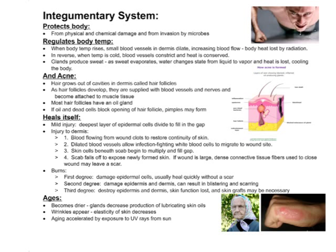The integumentary system also heals itself. For a mild injury, the deepest layer of epidermal cells divides to fill in the gap. For injury deeper into the dermis, blood flows from the wound to clot and restore the continuity of the skin. Dilated blood vessels allow infection-fighting white blood cells to migrate to the wound. Then skin cells beneath the scab begin to multiply and fill the gap, the scab falls off, revealing newly formed skin. If the wound is very large, dense connective tissue fibers used to close it may leave a scar.